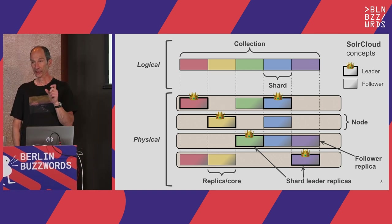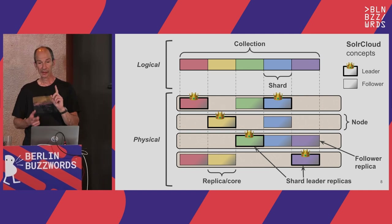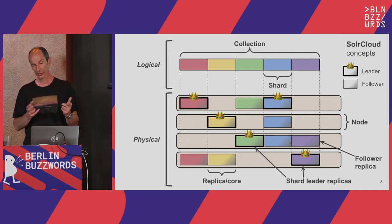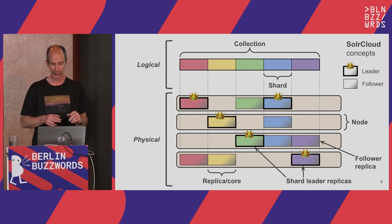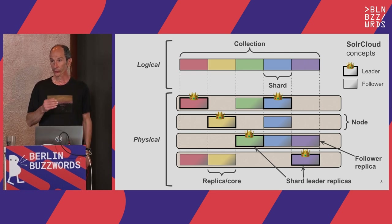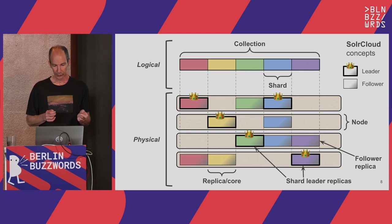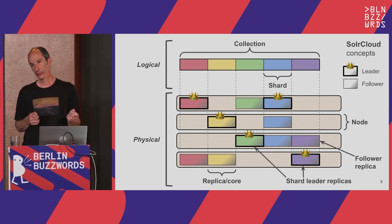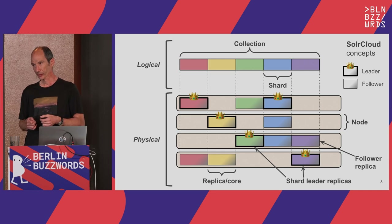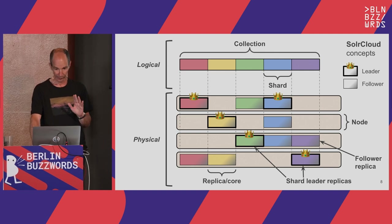A replica is any instantiation of a shard — be it a leader replica, the one taking writes, or a follower replica that is a copy of the leader and does not directly take indexing. These replicas live on nodes, which are the Solr JVMs. Usually you want to have one or zero replicas of a shard on every node, because having two replicas on the same node gives no benefit.